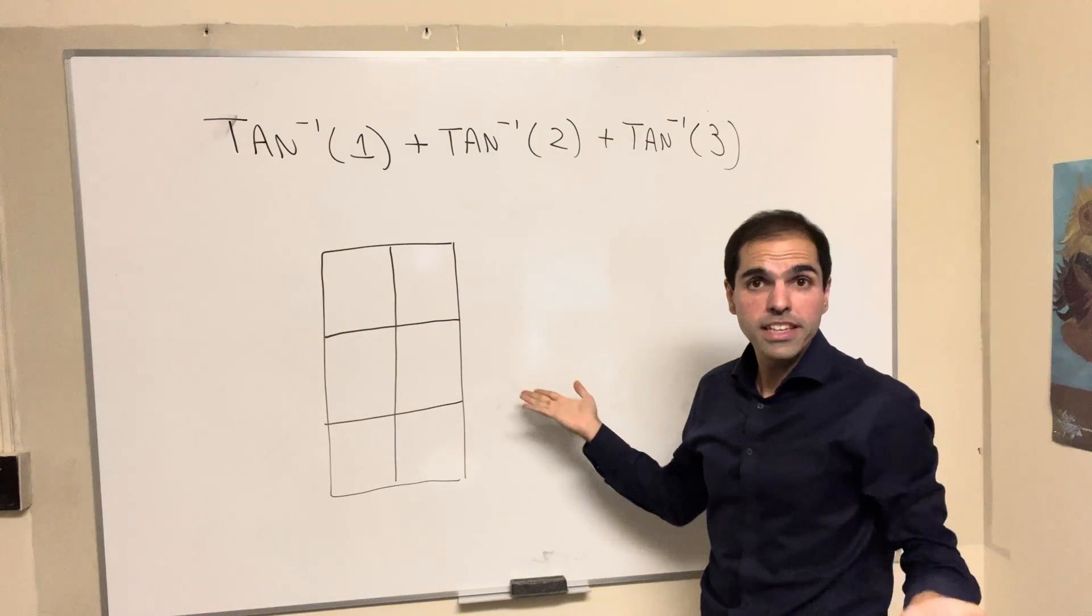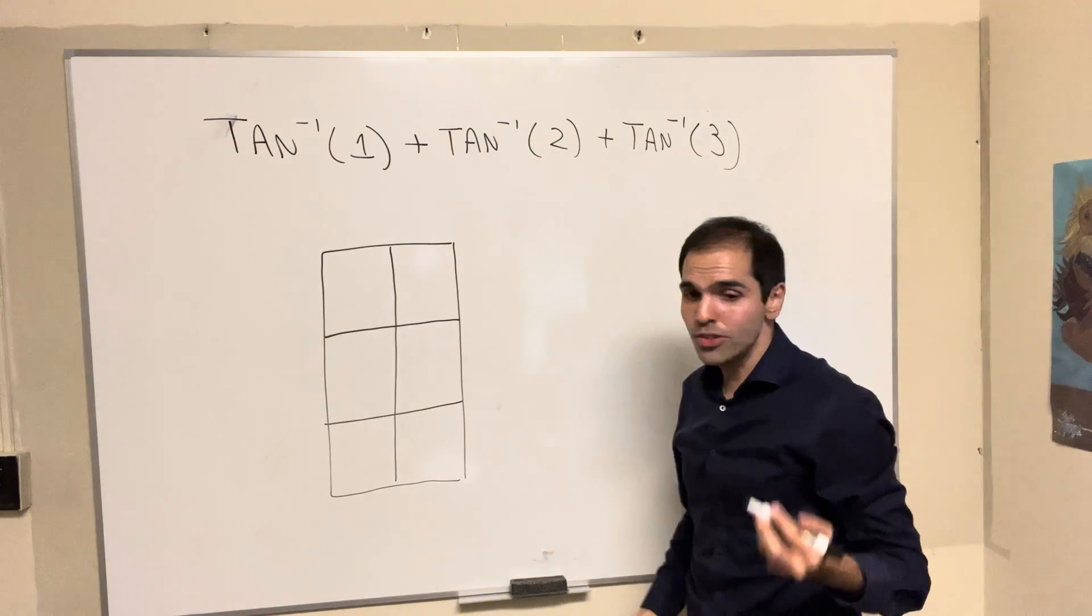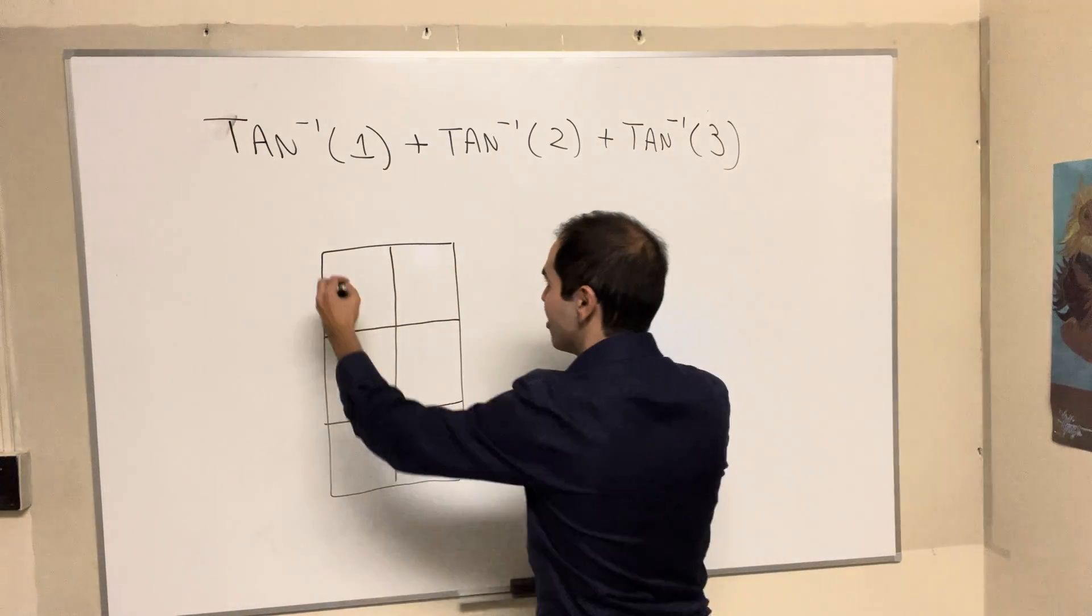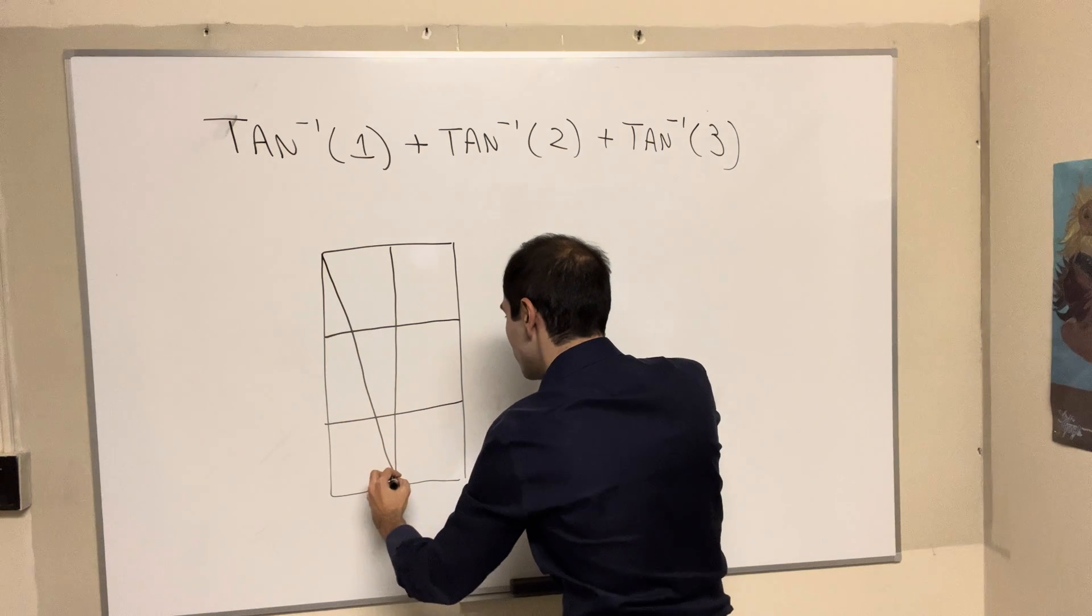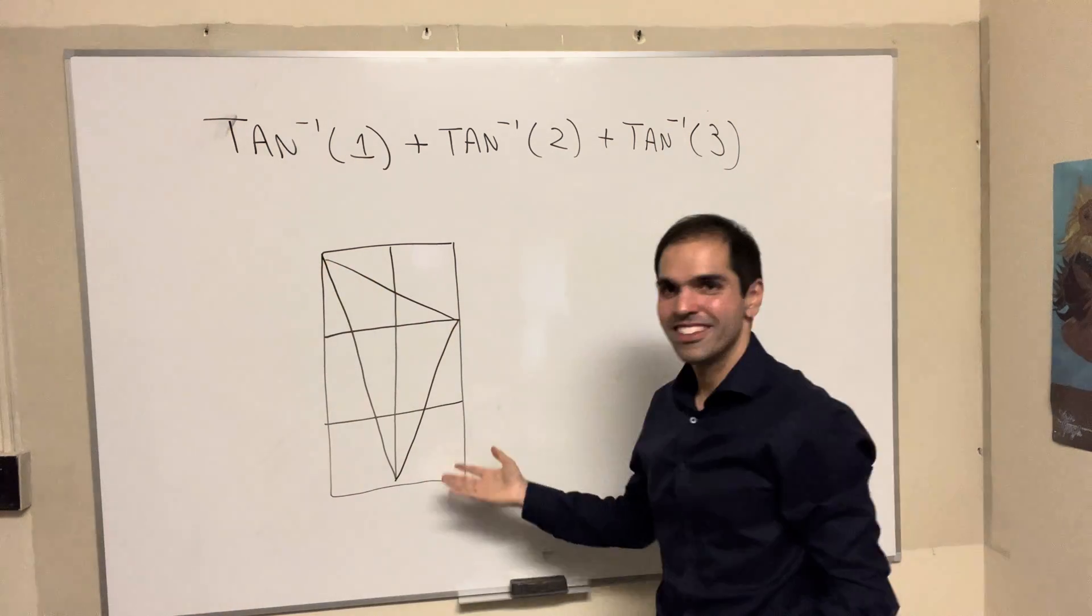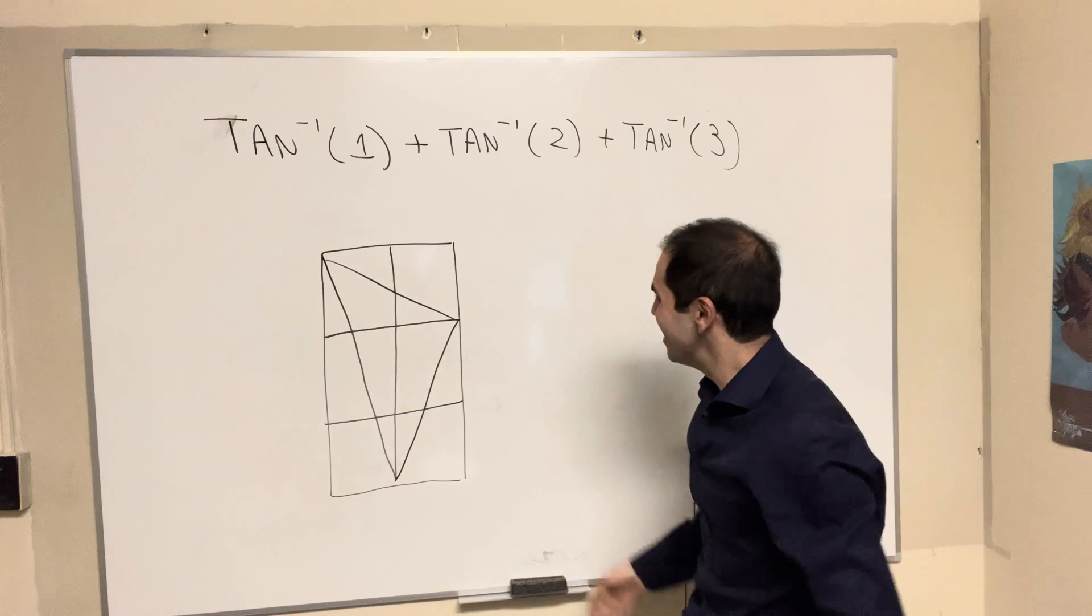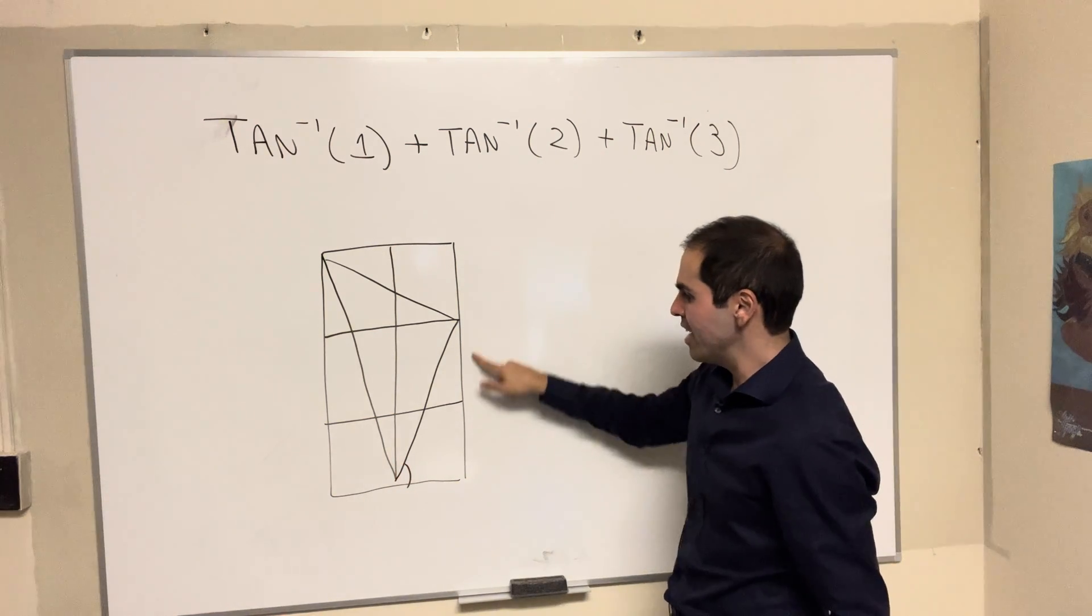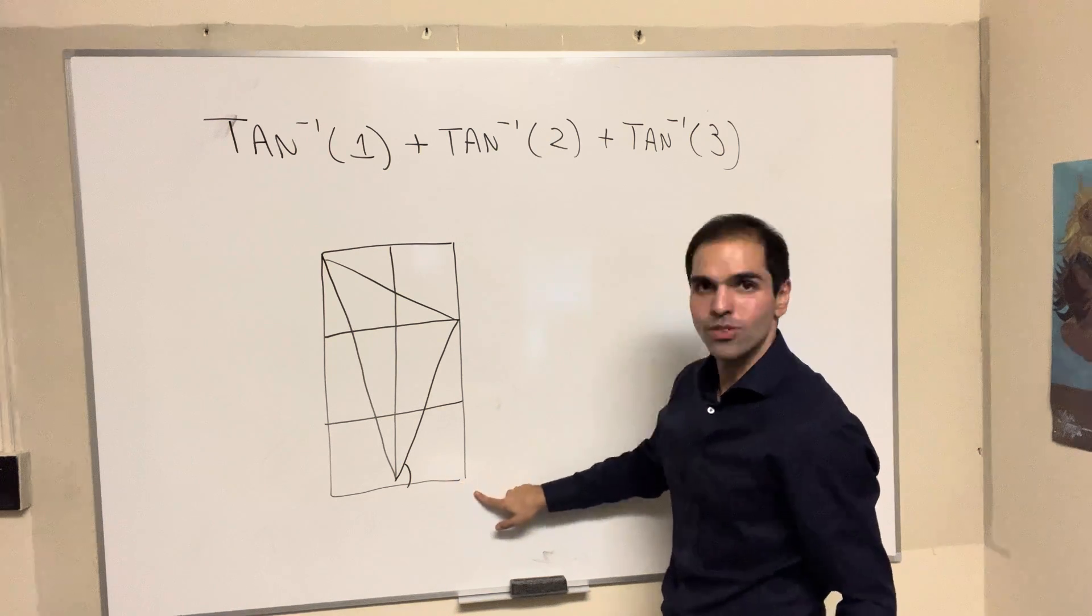The second proof is more geometric and has to do with the following grid. So 2π 3 grid. And let's draw the following triangle. Now, what is this angle? Well, here the rise is 2 and the run is 1.